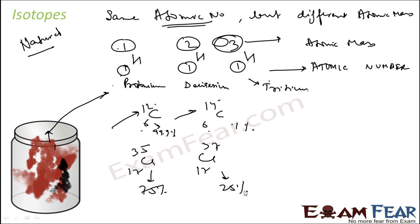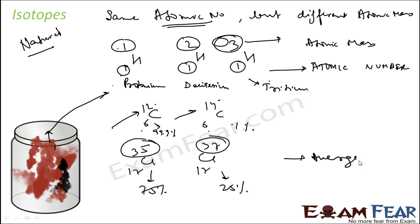So if you take chlorine from nature, it will have both chlorine isotopes — 75 percent of chlorine-35 and 25 percent of chlorine-37. Thus, if you take chlorine from nature, will the mass be 35 or will it be 37? We take the average. That's why you must have seen the chlorine atomic mass is neither 35 nor 37 — it is generally 35.5.